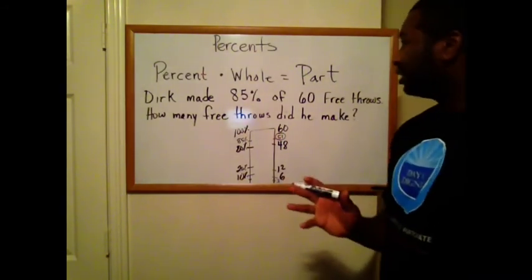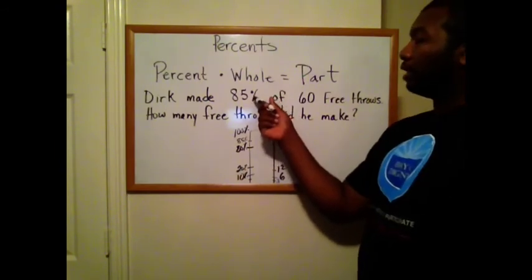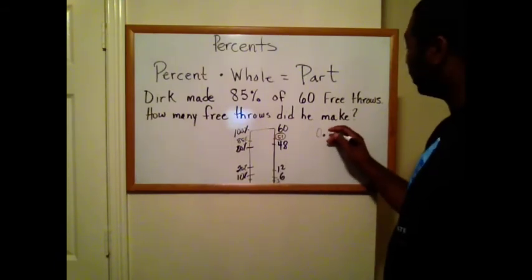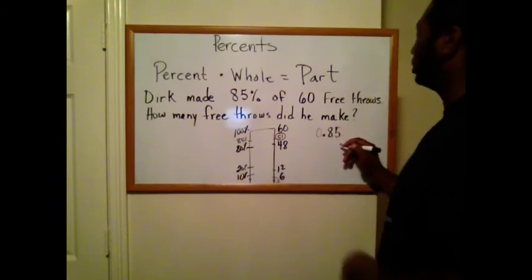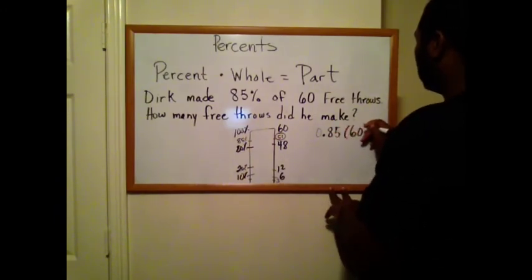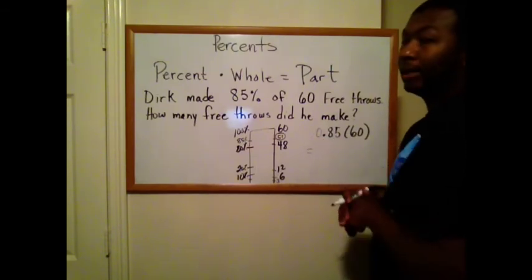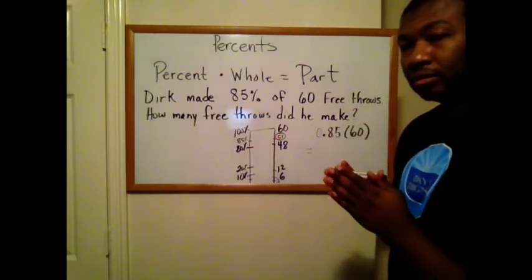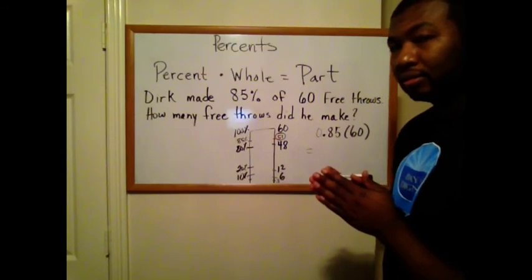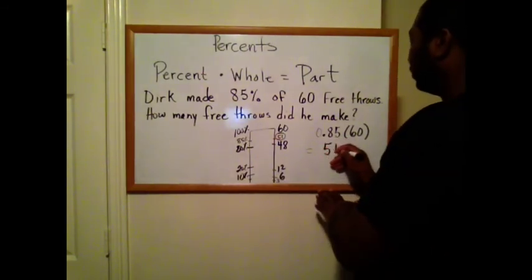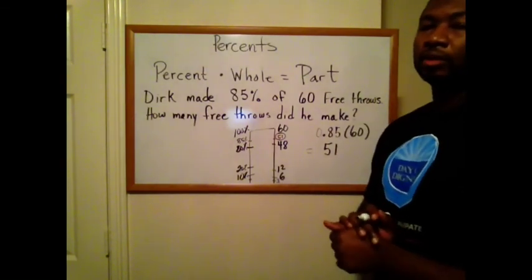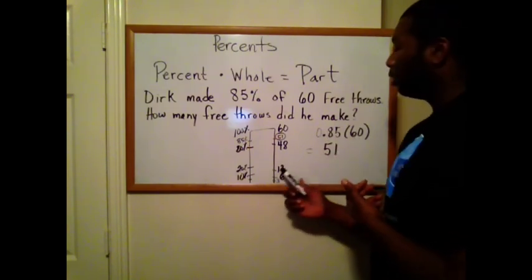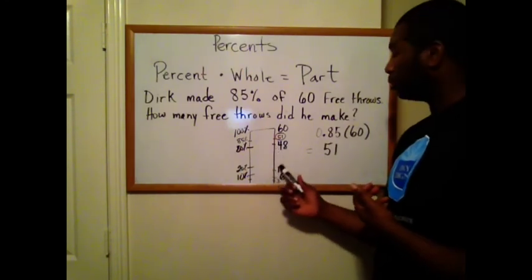Now, if you're not feeling the model, you can just stick to multiplying 85% of 60. That means change your percent to a decimal. So 85 hundredths times 60. Just multiply 85 hundredths times 60. And guess what the answer is. Go ahead, multiply. 51. You get the same answer. So whichever way is easier for you, multiplying 85 hundredths times 60, you get 51. Or if you want to visualize it to see if it's reasonable, you can use the percent model, 51.